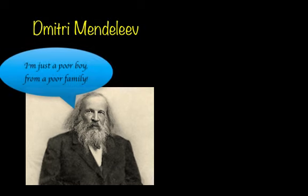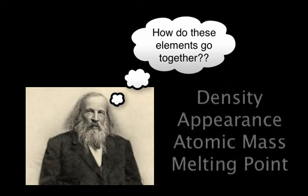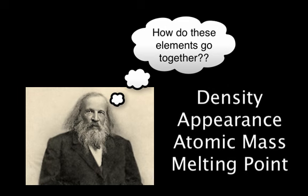In the 1860s, a Russian chemist named Dmitry Mendeleev began to look for patterns among the properties of the elements. He wrote the names and properties of the elements on pieces of paper. He included density, appearance, atomic mass, melting point, and information about the compounds formed from the elements.